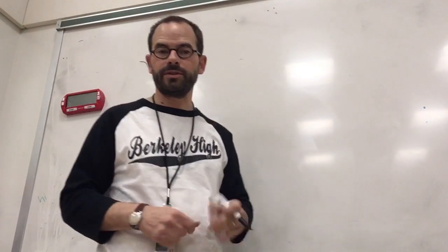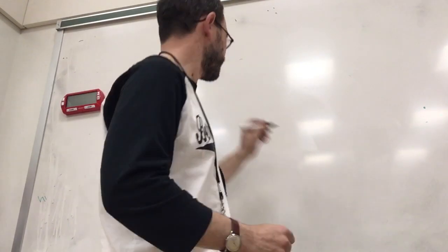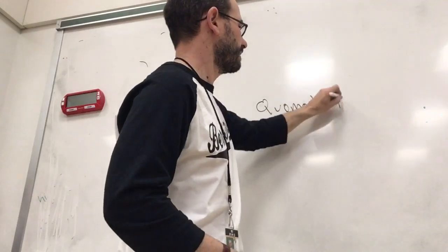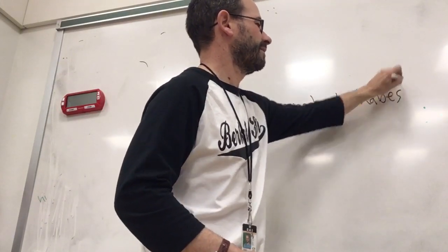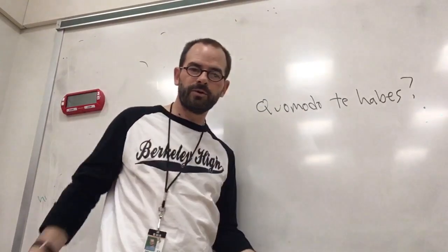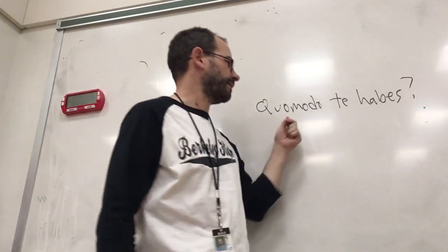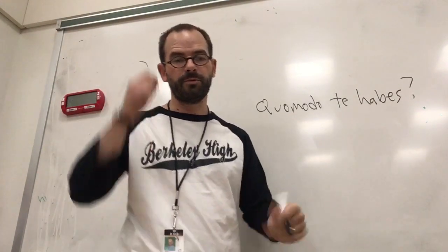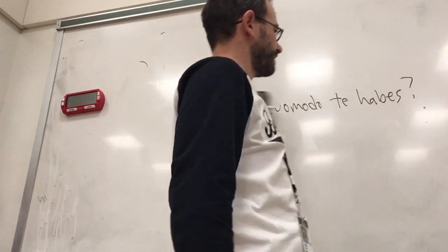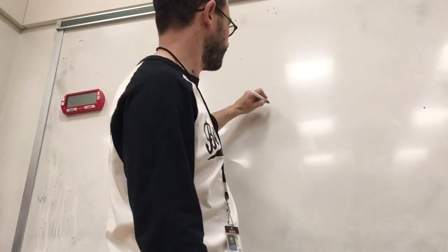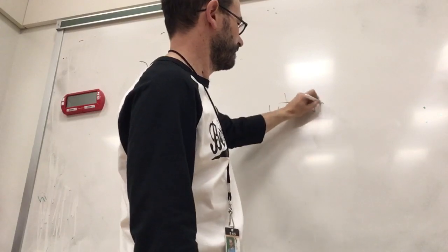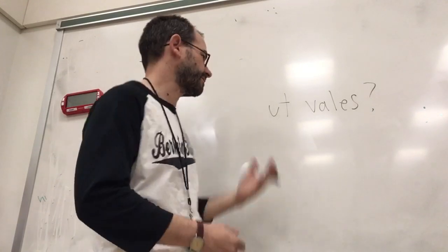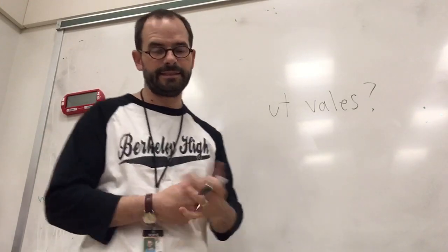If you want to ask how someone's doing, one way is 'Quo modo te habes' — literally, 'in what manner do you have yourself?' meaning 'how are you doing?' Another way to say that is 'Ut vales?' — 'how are you doing?' — which is a simpler one and a little easier to use.